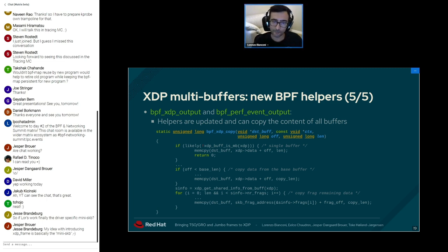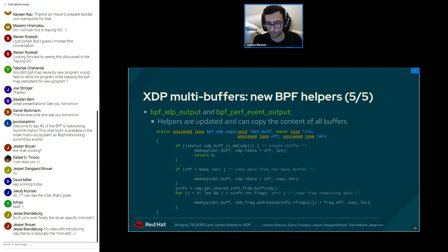We also proposed changes to bpf_xdp_copy, which is executed for example by the bpf_perf_event_output helper. Previously it assumed the XDP frame memory area is contiguous, but for an XDP multi-buffer it must copy data from both the linear part and the fragmented part of the received frame.